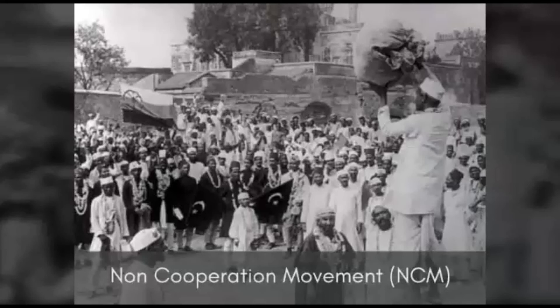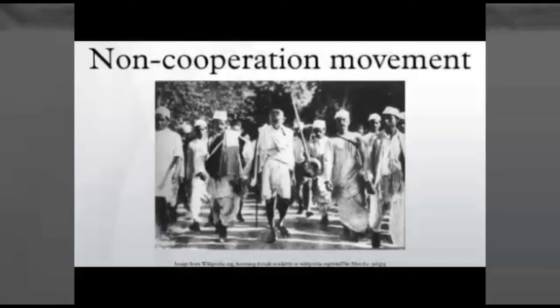Gandhiji, along with the non-cooperation movement, took up constructive programs which mainly included the spread of Swadeshi, Hindu-Muslim unity, prohibition of alcohol, removal of untouchability, popularized use of khadi, national education, etc. Due to these constructive programs, the national movement became more comprehensive in rural areas.